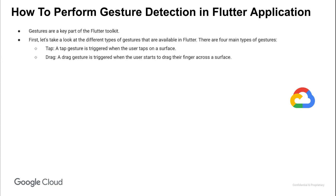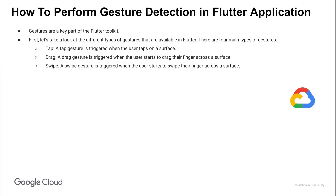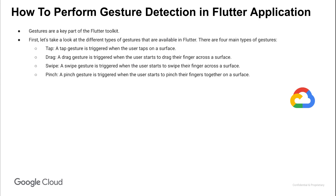We then have drag — a drag gesture is triggered when the user starts to drag their finger across the surface. Then we have swipe — a swipe gesture is triggered when the user starts to swipe their finger across the surface. Last, we have the pinch — a pinch gesture is triggered when the user starts to pinch their fingers together on a surface.